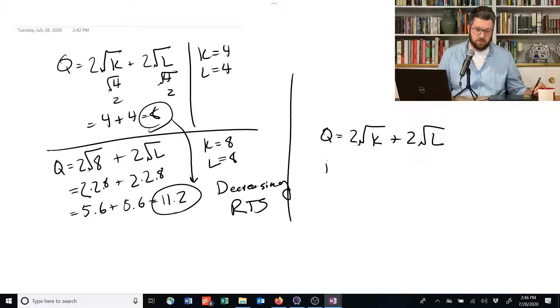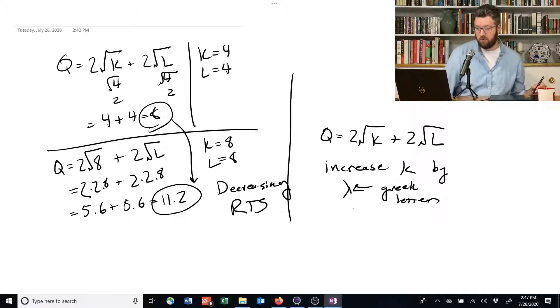Let's assume that we're going to increase K by, let's say, lambda, a Greek letter that we're going to use in this course a lot. And this is just some number. It could be 2, it could be 3, it could be whatever. The point is that we're now going to switch to...